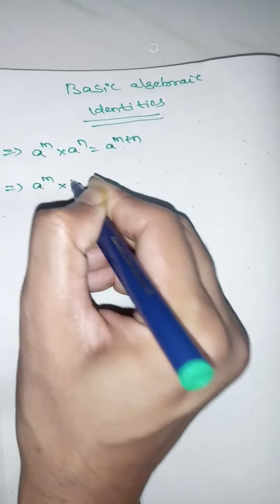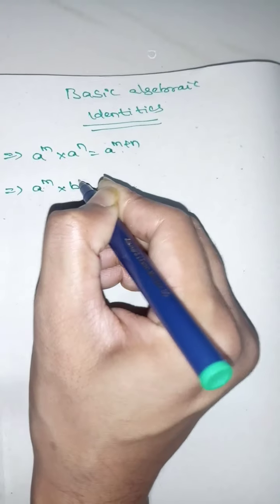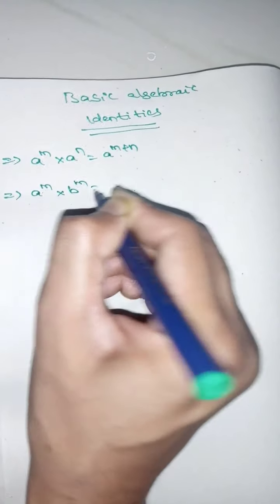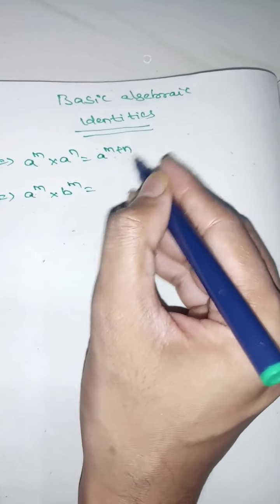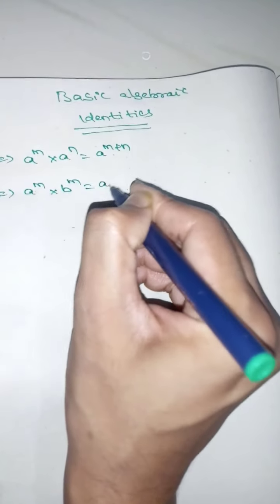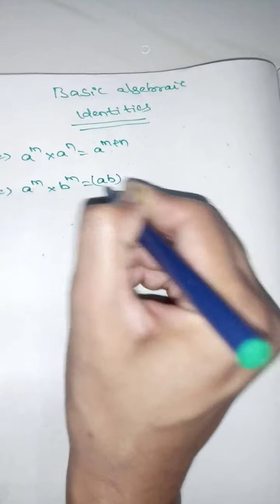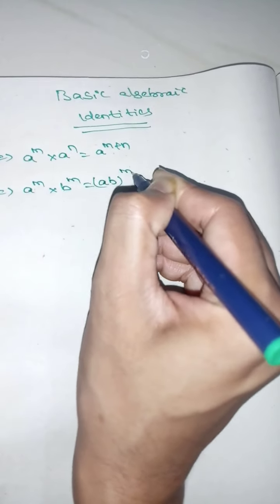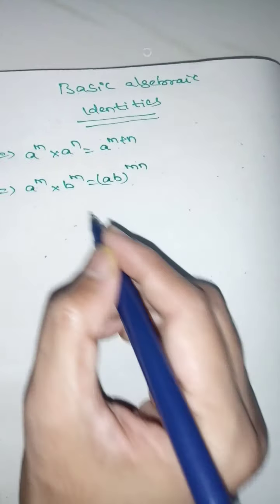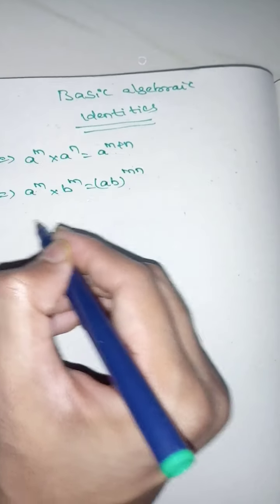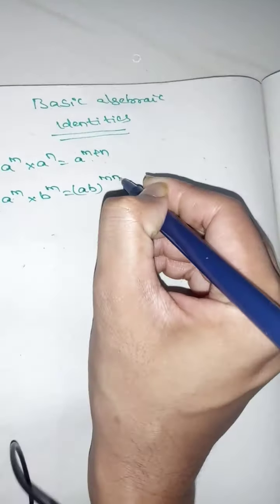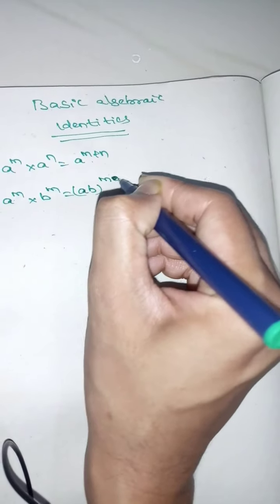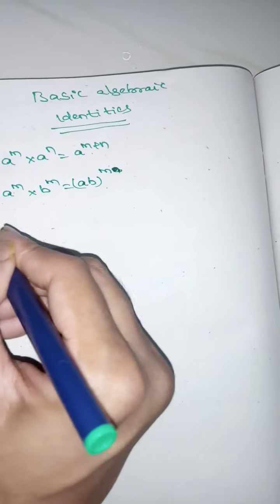a power m into b power m is equals to ab to the power of m. Here the bases are different but the power is the same.